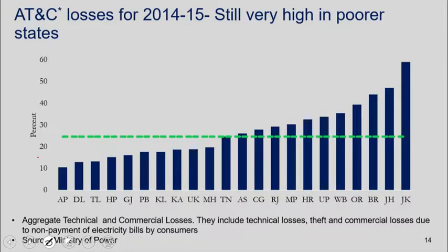Looking at ATC losses, as you go toward the right you see states with pretty high losses. Jammu and Kashmir is among the less well-performing states, and again you see U.P., West Bengal, Odisha, Bihar, Jharkhand, Madhya Pradesh, Rajasthan bringing up the less progressive part. AT&C losses are very high in India and this is a big part of the problem.